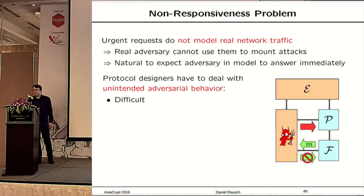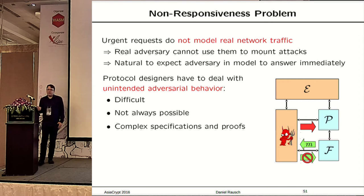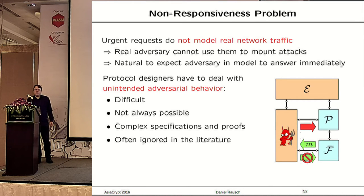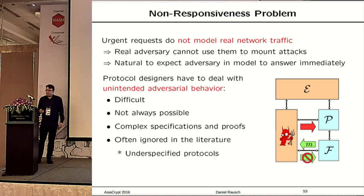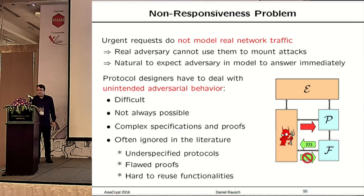Dealing with this is quite difficult — in some cases it may not be possible at all, and if possible, it complicates protocol specifications and proofs significantly. Because it's so unnatural to think about these artificial attacks that don't relate to anything in reality, it's often forgotten in the literature, leading to underspecified protocols, flawed security proofs where the composition theorem can no longer be used, and functionalities that cannot be reused to build new protocols.